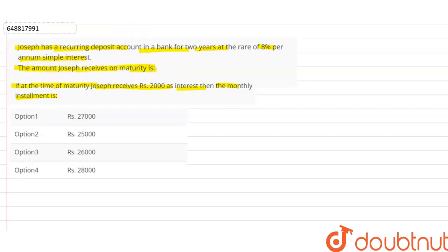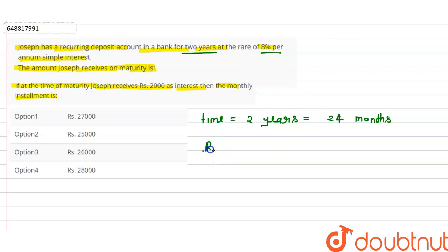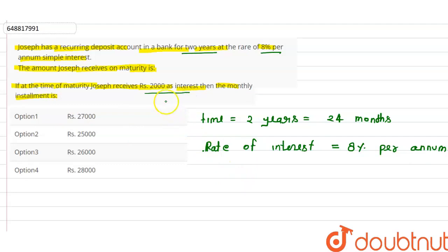First, we write the given data. Time is two years, which means 24 months. Rate of interest is eight percent per annum. And at the time of maturity, Joseph receives two thousand rupees as interest. So interest received in two years is two thousand rupees.